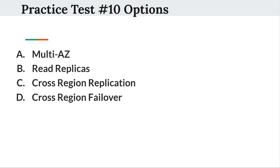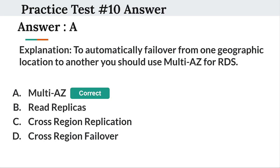Please select your answer in the next 5 seconds. So the right answer is option A. To automatically failover from one geographic location to another, you should use Multi-AZ for RDS. Thank you for watching this video; watch other parts for more.